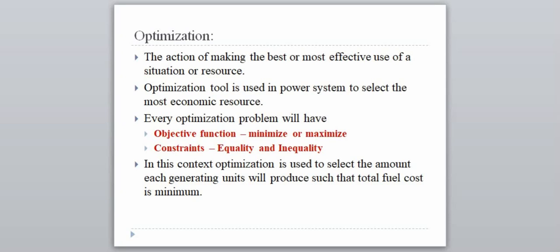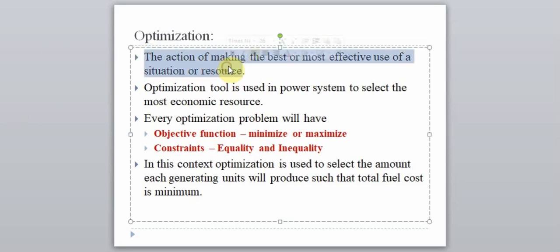Starting with optimization — what is optimization? As the name itself tells, optimization is a process of selecting the best resource. If you have ten resources, you have to select the best resource out of those ten. While selecting the best resource, there are certain conditions that we need to focus on, and those conditions are given by the objective function or the constraints.